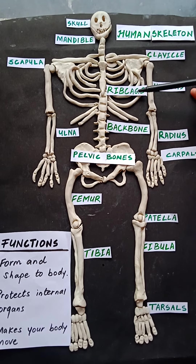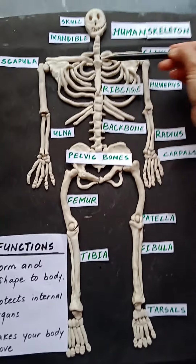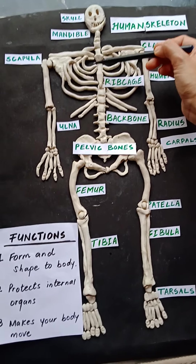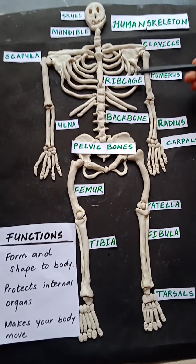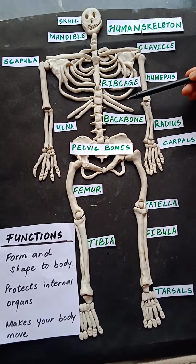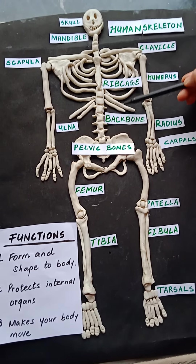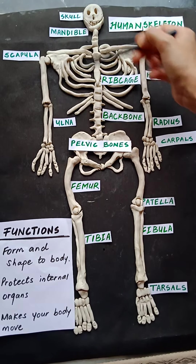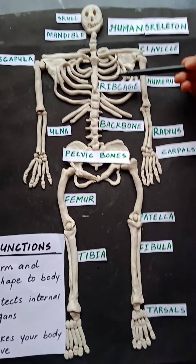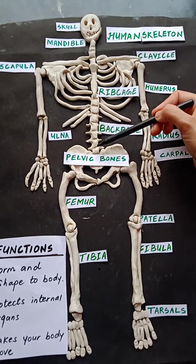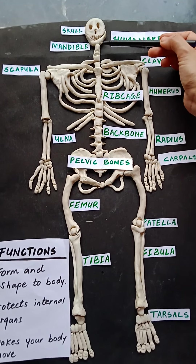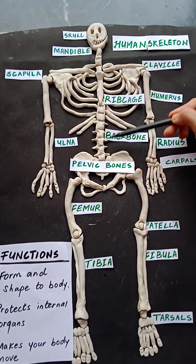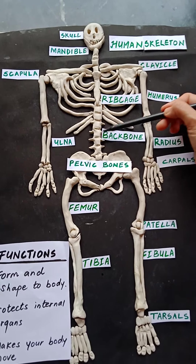This is our rib cage — 'cage' means a pinjara in Hindi. This rib cage protects your lungs and your heart. We have 12 pairs of ribs in a human body: 10 are fixed and 2 are floating. The upper 10 pairs are fixed to your backbone, and the lower 2 pairs are floating ribs. This is your backbone, running from top to bottom, and it is made up of vertebrae.